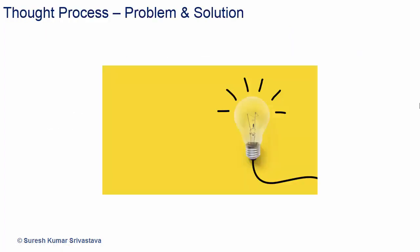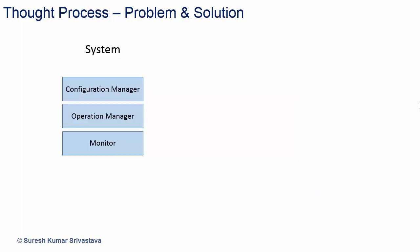It is always good to have a thought process for better software design. Suppose we want to have a group of objects for system management. We can have a Configuration Manager for doing configuration of the system, an Operation Manager for doing operations on the system, and a Monitor for monitoring the system.